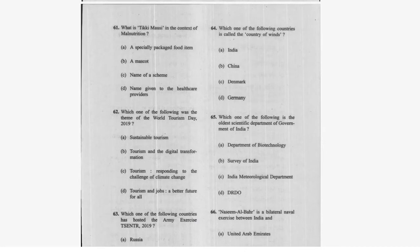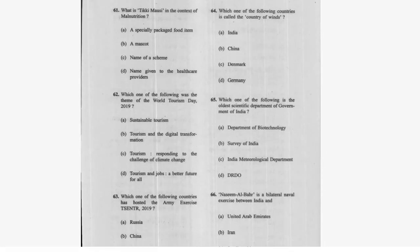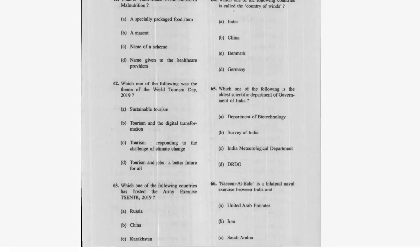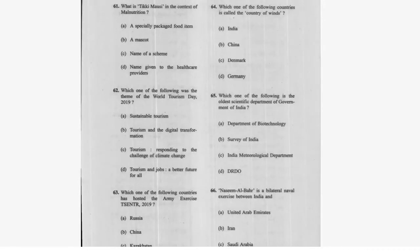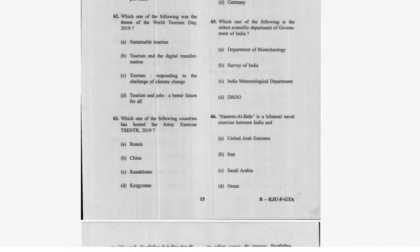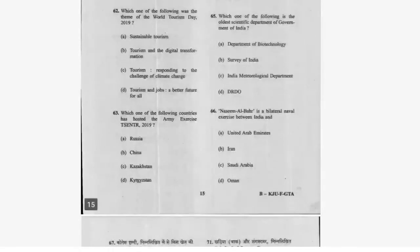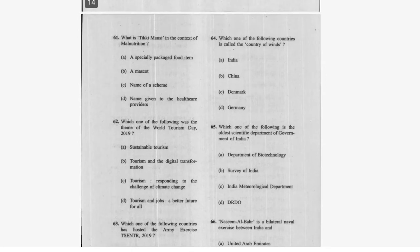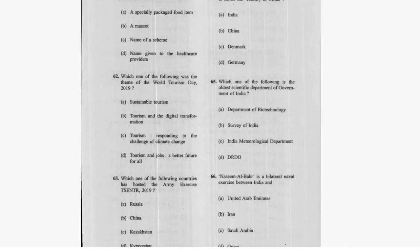Question 62: Which one of the following was the theme of World Tourism Day 2019? Option D is correct — 'Tourism and Jobs: A Better Future for All'. Question 63: Which country hosted the army exercise TSENTR 19? Next question: Which country is called the country of winds? Denmark — option C is correct.